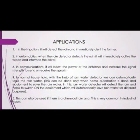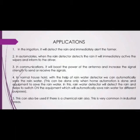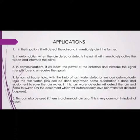There are several applications. In irrigation, it will detect rain immediately and alert the farmer. In automobile, when the rain detector detects rain, it will immediately activate wipers and inform the driver. In communications, it will boost the power of the antenna and increase signal strength for sending or receiving signals. In normal households, with the help of the rainwater detector, we can automatically save rainwater. This can be done when home automation is set up with equipment to save rainwater — the detector will switch on equipment to automatically save rainwater for different purposes. This can also be used to detect chemical rain, which is very common in industrial areas.